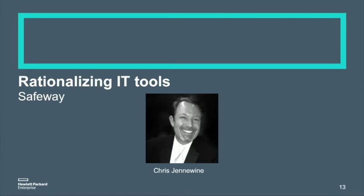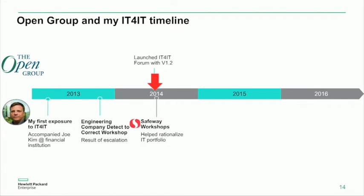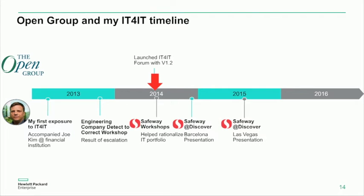The next case study is Chris Genowine from Safeway. This is a situation where we were already embedded, helping Chris automate a lot of the functions he was in charge of. This takes us into the mid-2014 timeframe. After we went through the process and presented our rationalization results, he presented this twice — once at Discover Barcelona in Europe, and then again in Las Vegas.